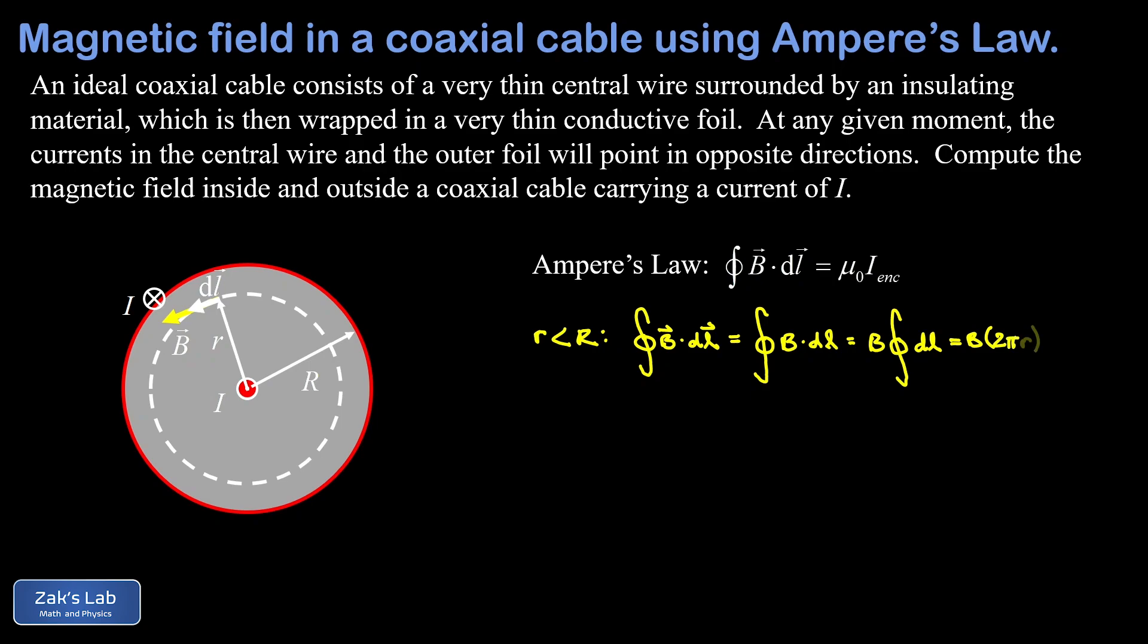For the left-hand side of Ampere's Law, that has to equal μ₀ times the current enclosed by the loop, which is simply I. Now we can divide by 2πr and solve for B. We get that the magnetic field magnitude is μ₀I divided by 2πr, and we recognize that as the exact same result we got for the magnetic field outside of a thin wire.